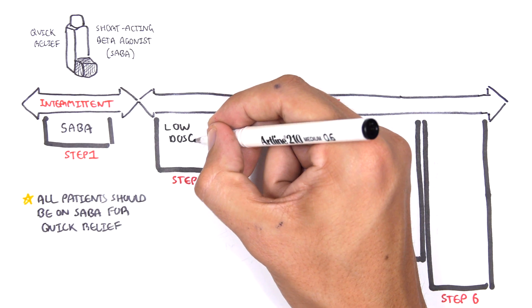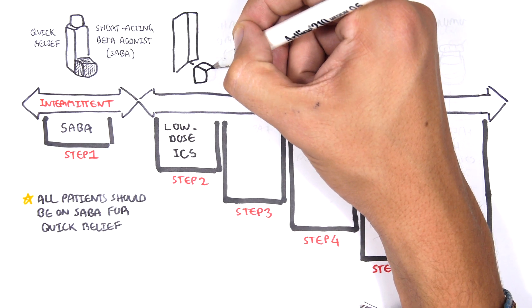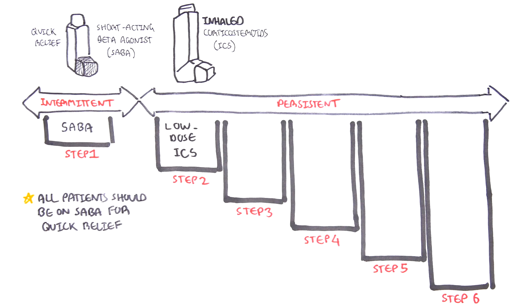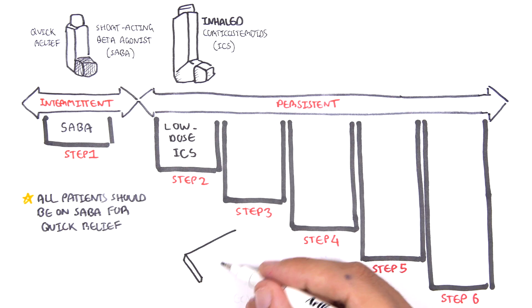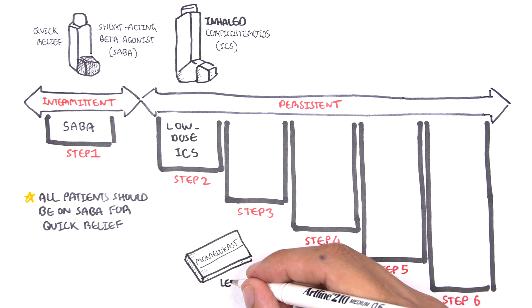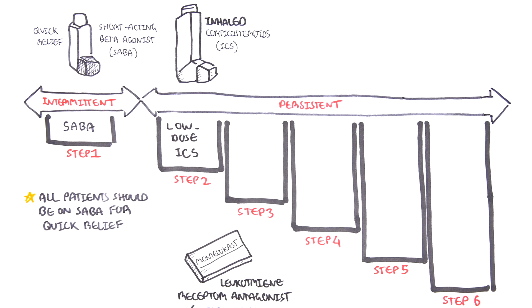Step 2, you can add a low-dose inhaled corticosteroid. This is used as a preventer together with the short-acting beta agonist, which is the reliever. If patients cannot handle corticosteroids, other alternatives are available such as the leukotriene receptor antagonist, montelukast.